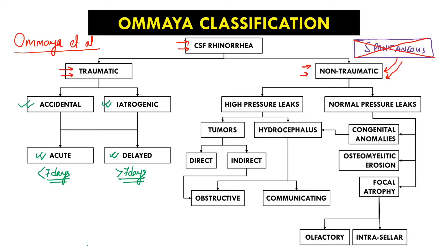Coming to the non-traumatic variant, it was classified into high pressure leaks and normal pressure leaks. High pressure leaks can be because of tumors in the brain or because of hydrocephalus. Tumors may directly contribute to CSF rhinorrhea, or may indirectly contribute by causing obstructive hydrocephalus. Hydrocephalus can be of obstructive or communicating variant.